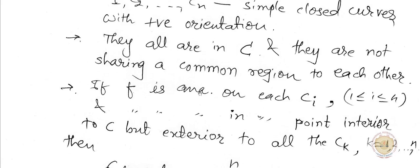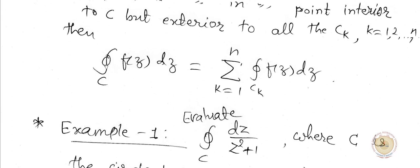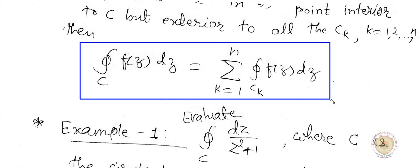If F is analytic on each of these contours and further if it is analytic interior to the contour C but exterior to all these contours Ci, then you can always find the contour integral of f(z) dz as the sum: sigma from k equals 1 to n of the integration over Ck of f(z) dz.